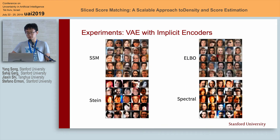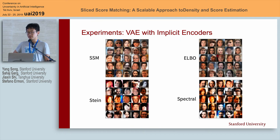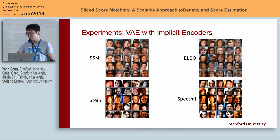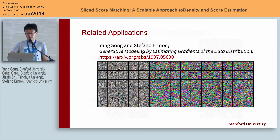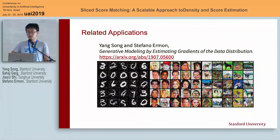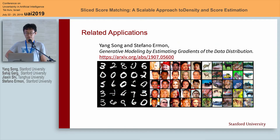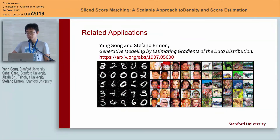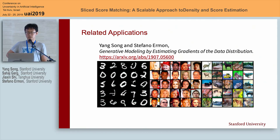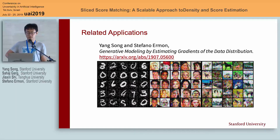Additionally, sliced score matching can be applied beyond learning unnormalized models. It can train variational autoencoders where the encoder distribution is implicit. We train a VAE with implicit encoder on the CIFAR-10 dataset and show that sliced score matching generally produces samples of higher quality, with FID scores smaller than other objectives. Furthermore, sliced score matching can estimate the scores of the data distribution and directly produce samples with Langevin dynamics. In ongoing work, we show this approach produces high-fidelity images comparable to GANs, achieving a new state-of-the-art inception score on CIFAR-10.